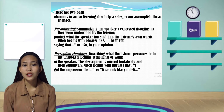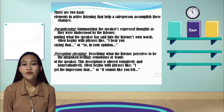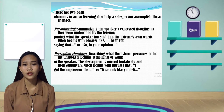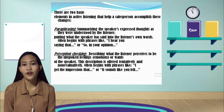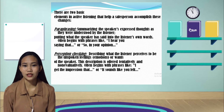Next is perception checking — describing what the listener perceives to be the unspoken feelings, emotions, or wants of the speaker. This description is offered tentatively and non-evaluatively. It often begins with phrases like 'I get the impression...' or 'it sounds like you felt...'